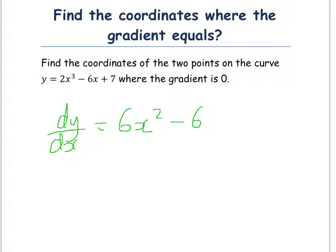And as I said before, we're told that we're looking for the coordinates where it gives us the gradient to 0. So we're going to set dy by dx equal to 0.